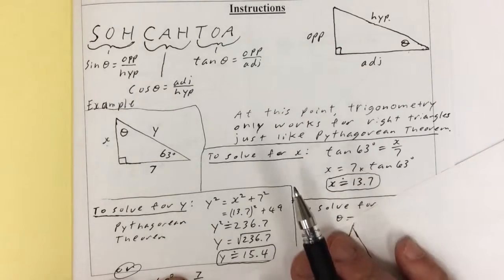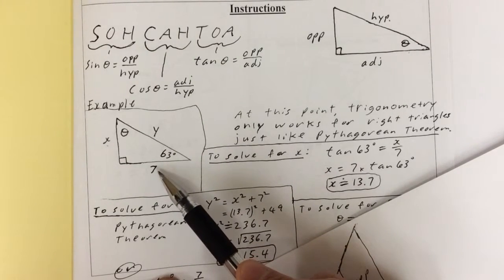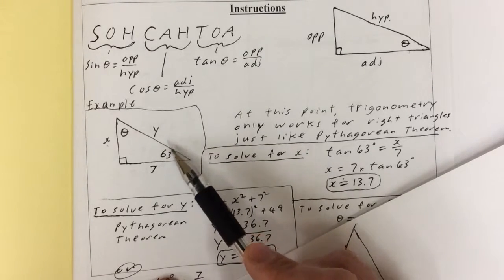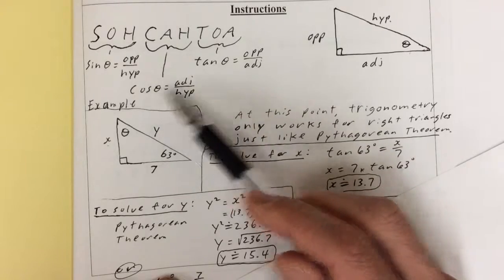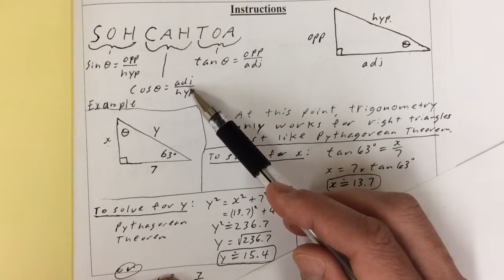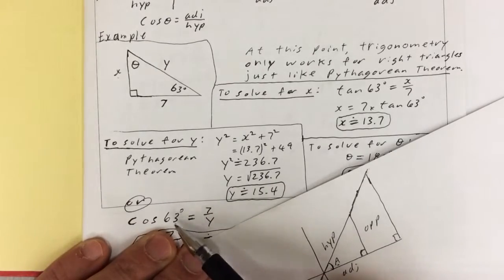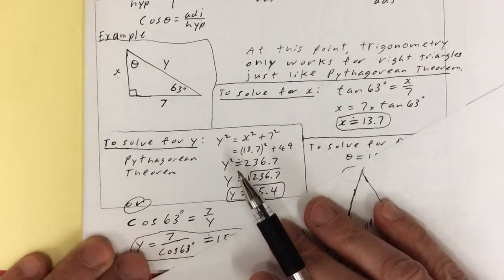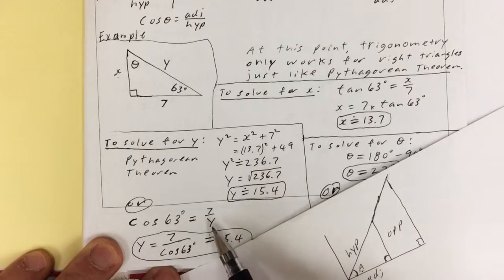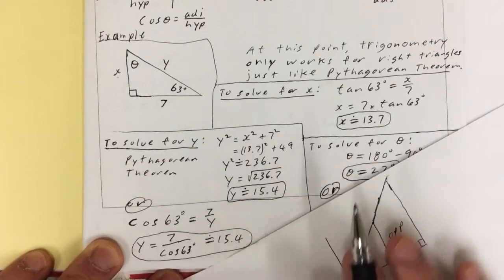Alternatively, we can use cosine. If I'm trying to find y, which is the hypotenuse, and I know the adjacent side, the formula that has adjacent and hypotenuse is cosine. So, cos of 63 equals 7 over y — adjacent over hypotenuse. Doing the algebra, bring y up and cos 63 down: y equals 7 over cos 63. Plug that into your calculator and you get 15.4.